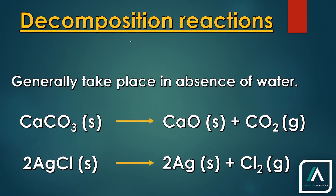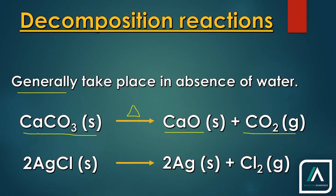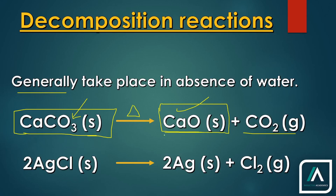The next type are decomposition reactions — one reactant decomposes into fragments. Decomposition reactions generally take place in the absence of water, so generally you won't see aqueous solutions. For example, calcium carbonate decomposes into calcium oxide and carbon dioxide. Calcium carbonate is a salt, so it is solid. Calcium oxide is a metal oxide, so it is going to be solid — it is quick lime, a white powder. Carbon dioxide is a gas — everyone knows that.